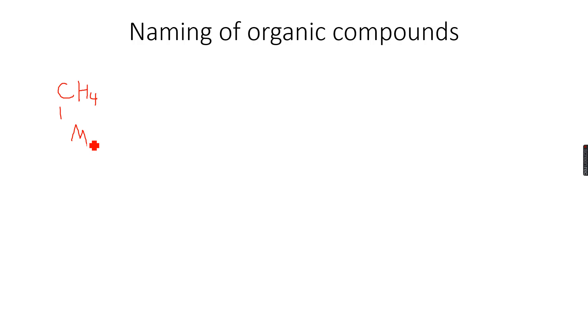So whenever there's one carbon atom, the name starts with meth. When there are two carbon atoms, the name starts with eth. When there are three, the name starts with prop. When there are four, the name starts with but. When there are five, the name starts with pent. When there are six, the name starts with hex. When there are seven, the name starts with hept.